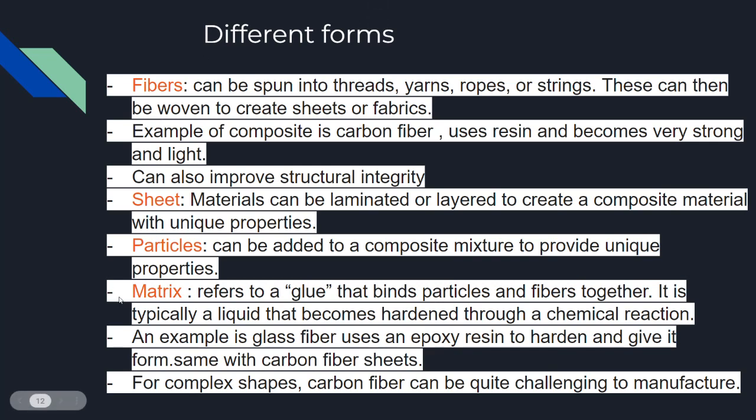Fibers can be spun into threads, yarns, ropes, or strings, then woven to create sheets of fabric. Carbon fiber is heavily used in airplanes to make them lighter and more resistant to air pressure. It uses resins and becomes very strong and light, improving structural integrity — that is why it is used in aircraft.